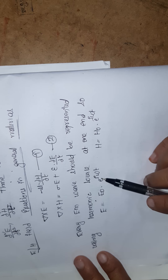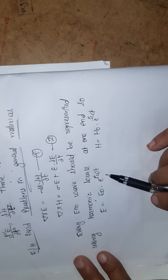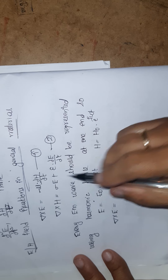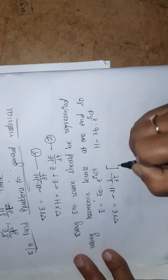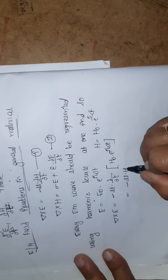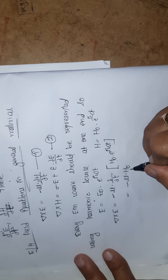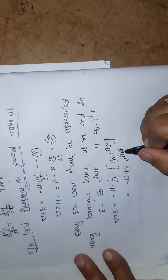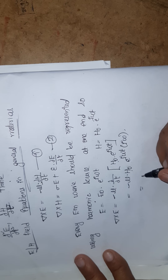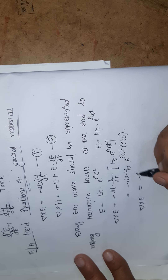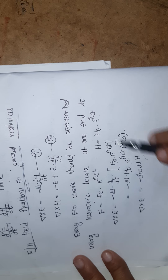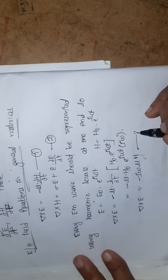We know that e^(j omega t) expands to cos(theta) plus j sin(theta) — sinusoidal again. From equation 1, del cross E equals minus mu times dou/dou t of H₀ e^(j omega t). Differentiating with respect to t: H₀ is constant, and the derivative of e^(j omega t) gives j omega times e^(j omega t). So del cross E equals minus j omega mu H. Consider this as equation 3.